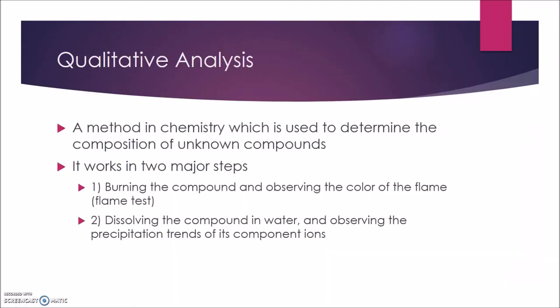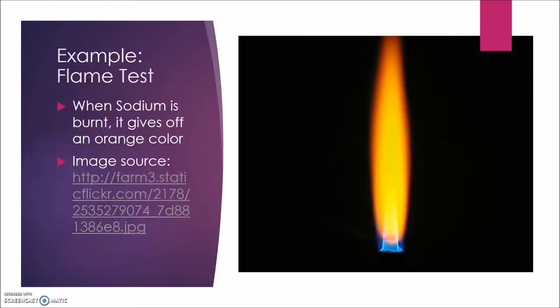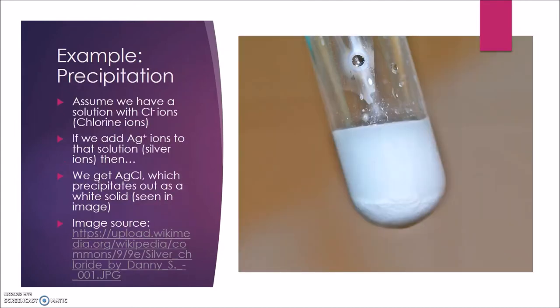Qualitative analysis is a very important process in chemistry used by high school students and college professors alike to identify an unknown compound in two major steps. The first step is to burn the compound and observe the color of the flame, as each cation gives off a unique color. The second step is to observe trends in how the compound precipitates from a solution, as each compound has a unique pattern in how it precipitates.